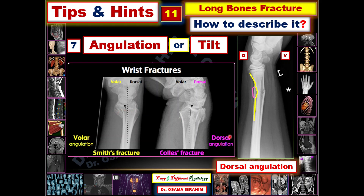The most common angulation fracture is the Colles' fracture, which has dorsal angulation, compared with the Smith's fracture, which has volar angulation — because the angle is at the volar aspect, as seen here with the scaphoid. So the angulation is very important for discriminating and recognizing types of fractures, as it can distinguish Colles' from Smith's fracture. It can also be described as tilt — volar tilt or dorsal tilt — with the same meaning.